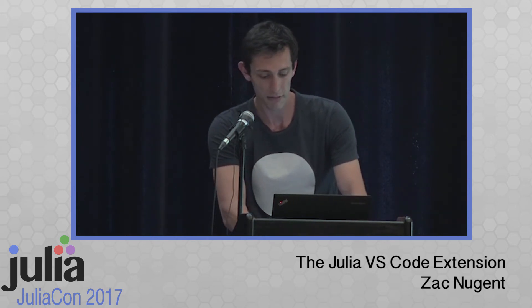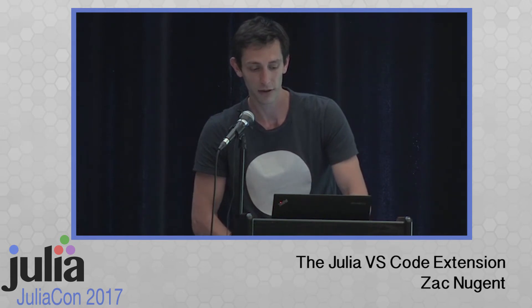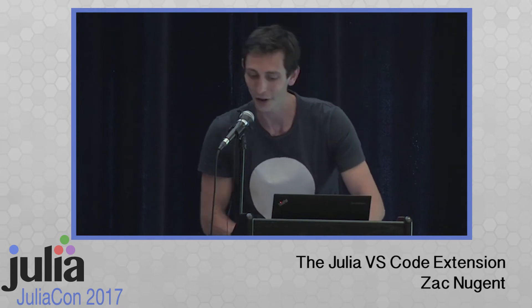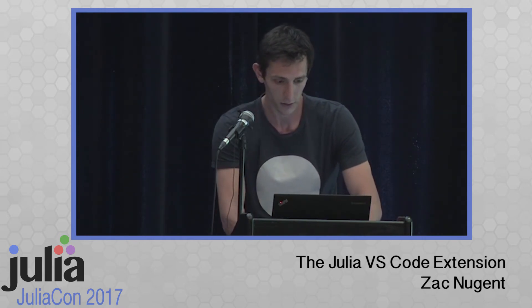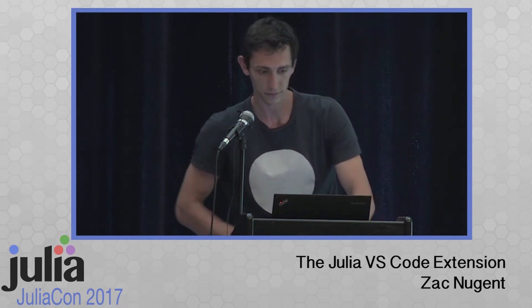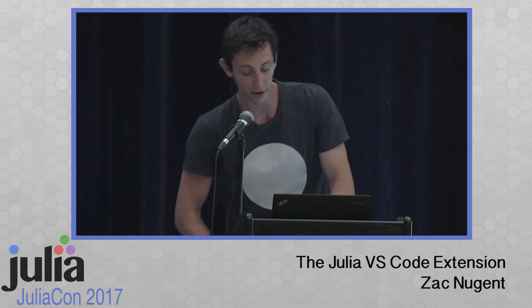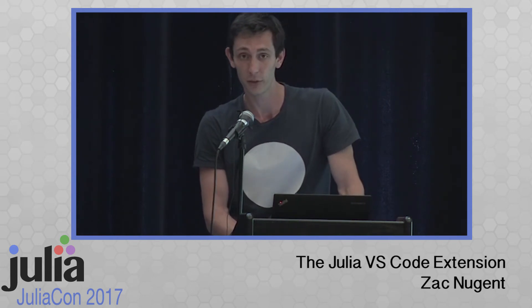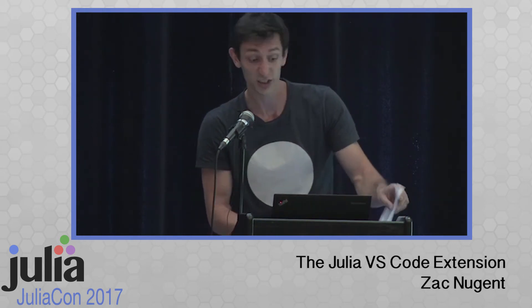If we type in the name of anything from base — for example, Rand — we'll get the documentation that comes from the REPL. It's the same sort of thing you'd get if you were to do a question mark and then type the word. And it displays it all in Markdown, which is nice.